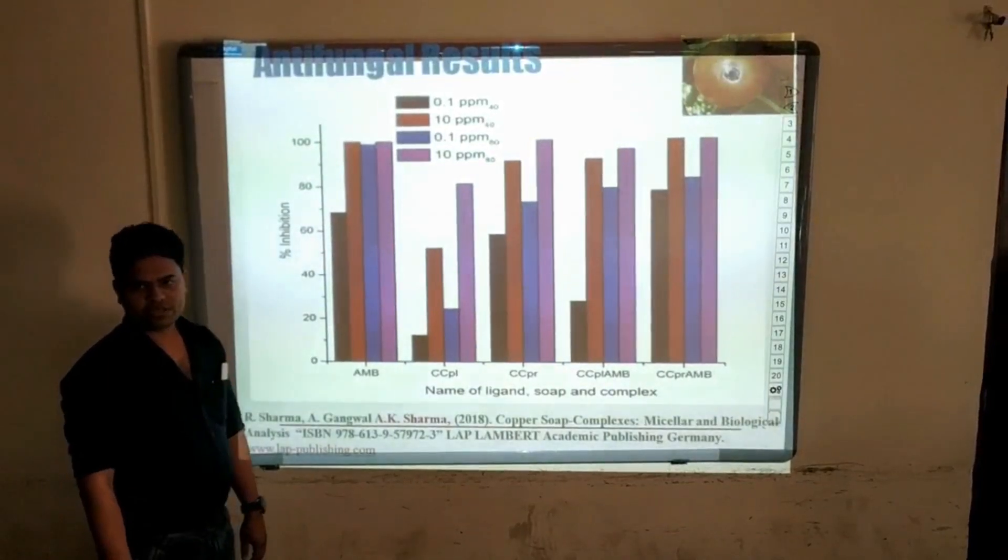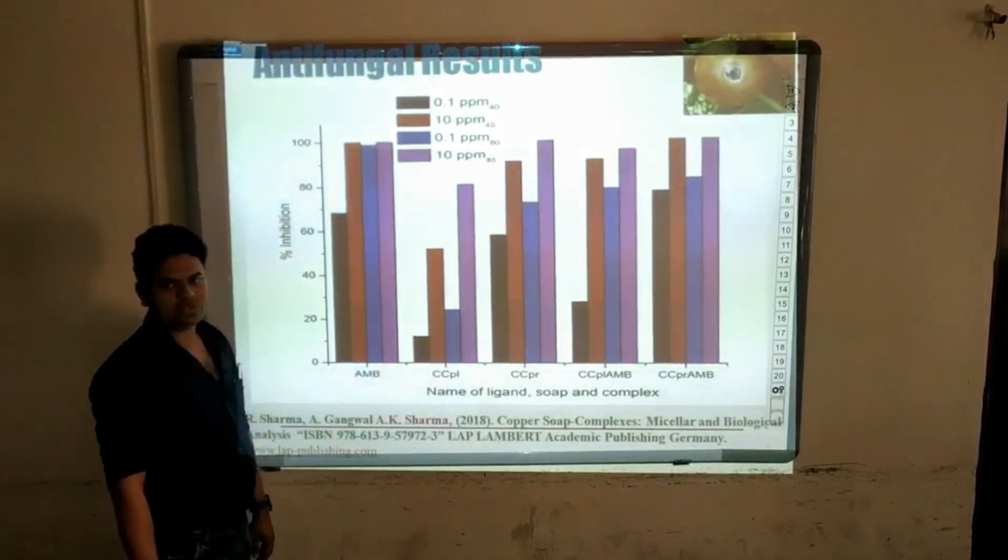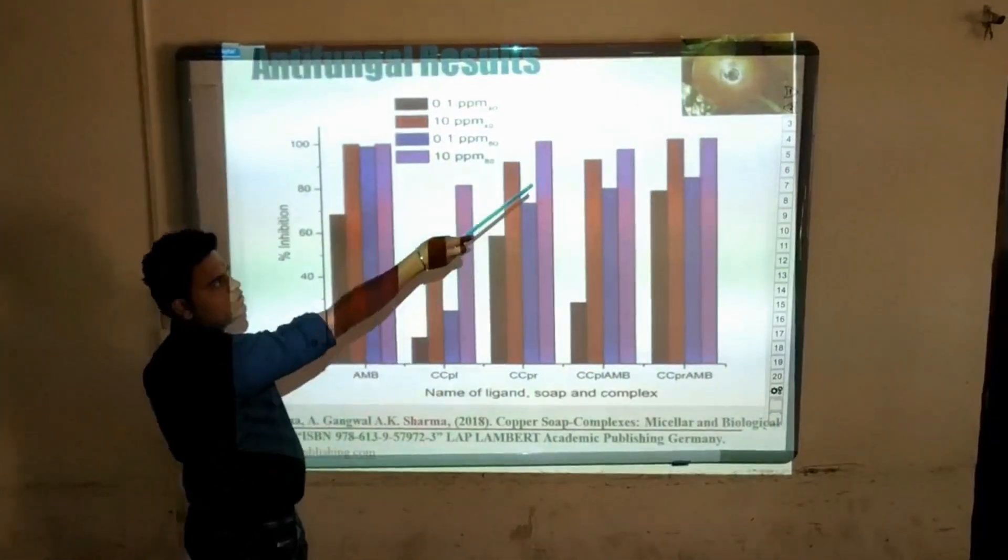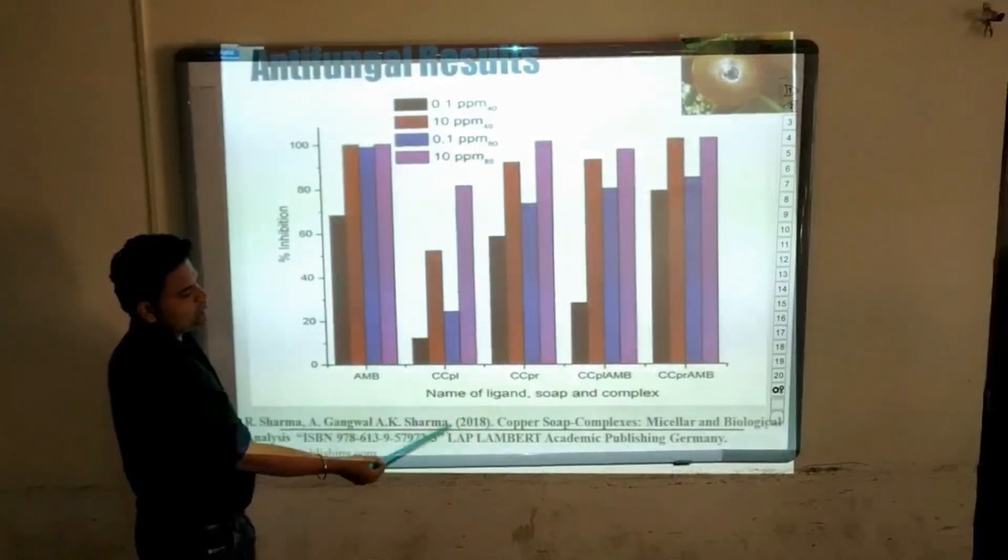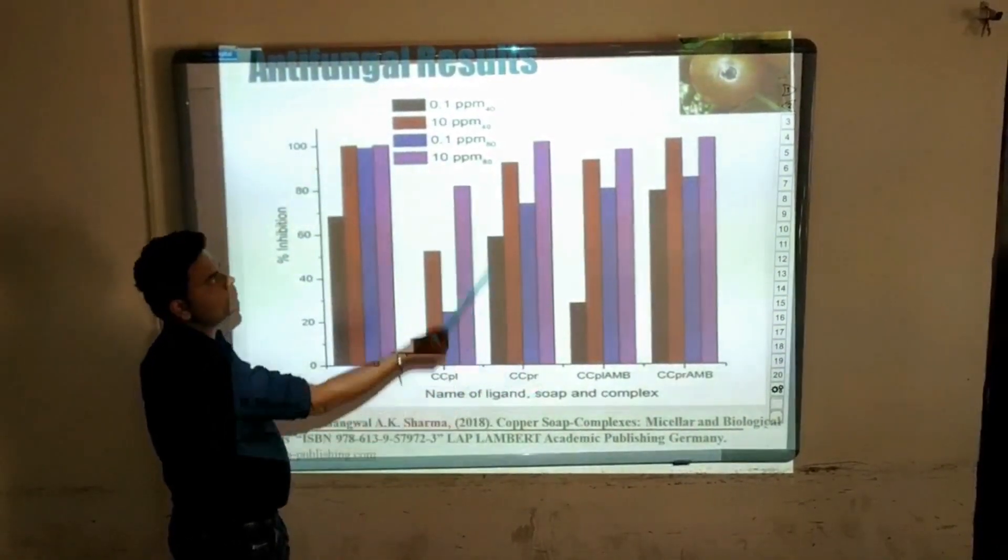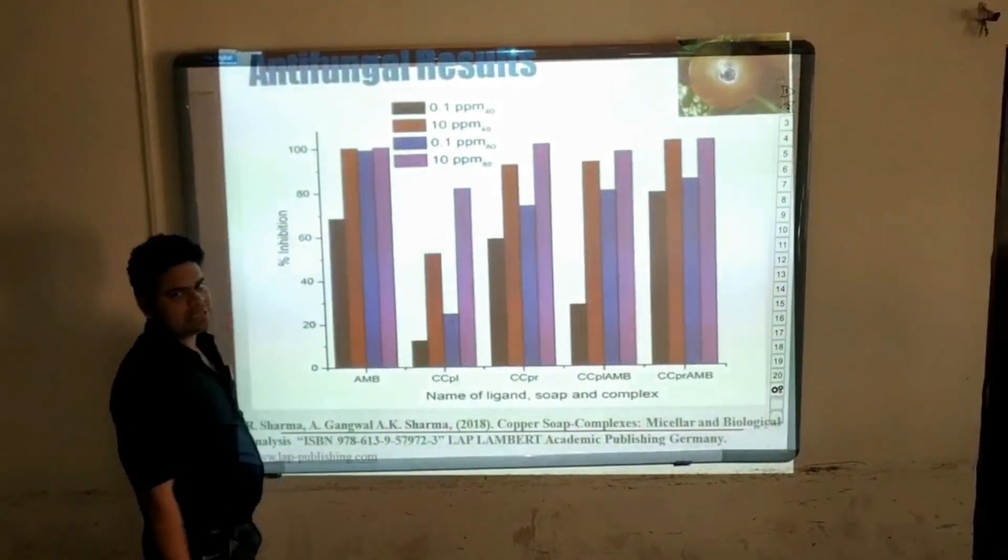Finally, we check the antifungal activities of our complexes. So first of all, we cultured and isolated the fungi Alternaria from spoiled tomato and after that, we prepared different solutions of the ligand, copper surfactant and the complexes in 0.1 and 10 ppm in 40% and 80% methanol-benzene mixture.